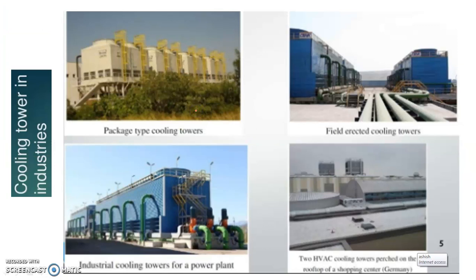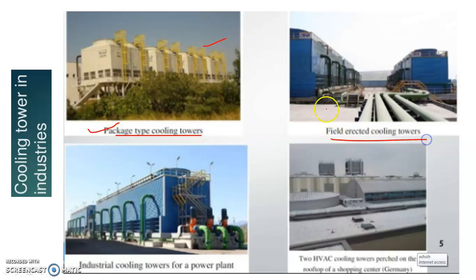Here are some sketches, pictures, and photographs of different cooling towers used in process industries. Number one is the package type cooling tower. Number two is the field erected cooling tower. Industrial cooling towers for power plants are also available, as well as HVAC cooling towers.